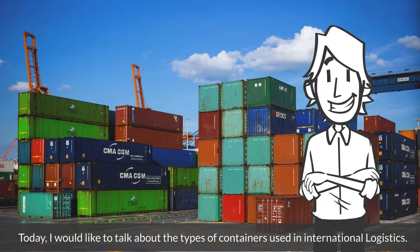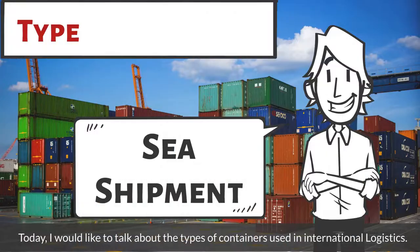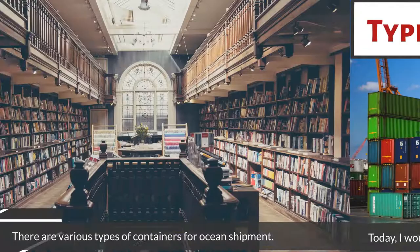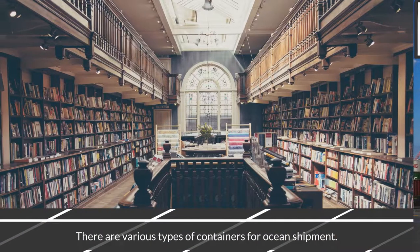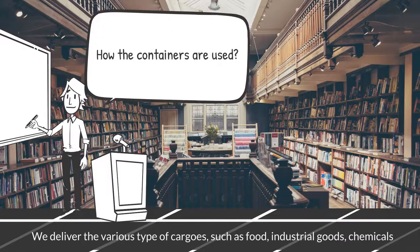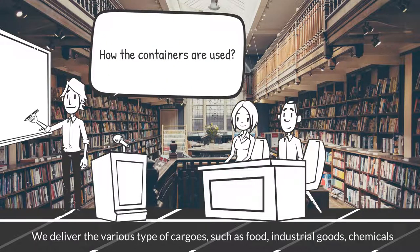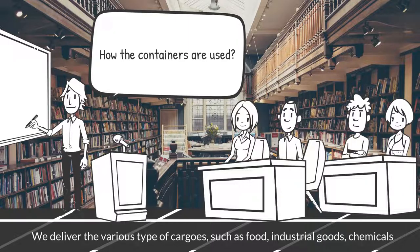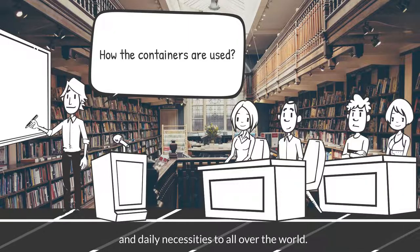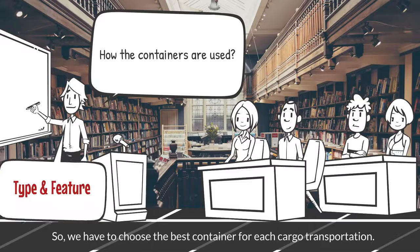Today, I would like to talk about the types of containers used in international logistics. There are various types of containers for ocean shipment. We deliver various types of cargoes, such as food, industrial goods, chemicals, and daily necessities all over the world. So we have to choose the best container for each cargo transportation.